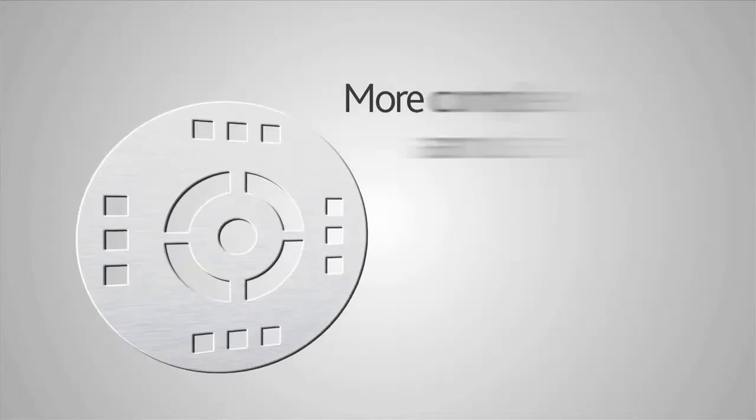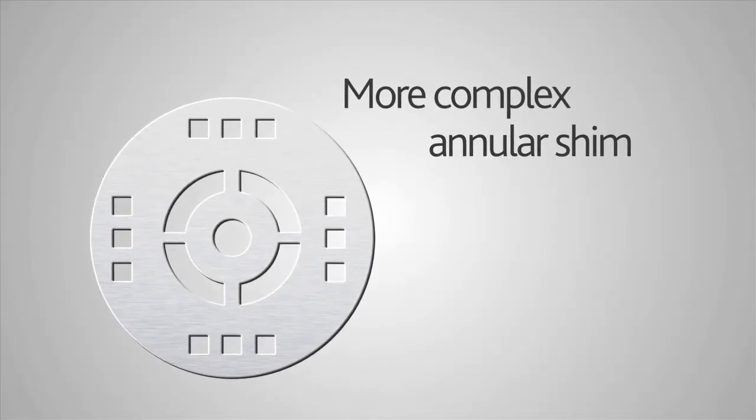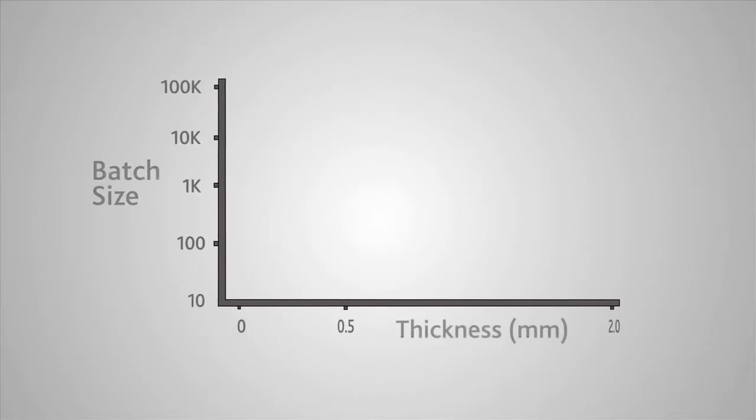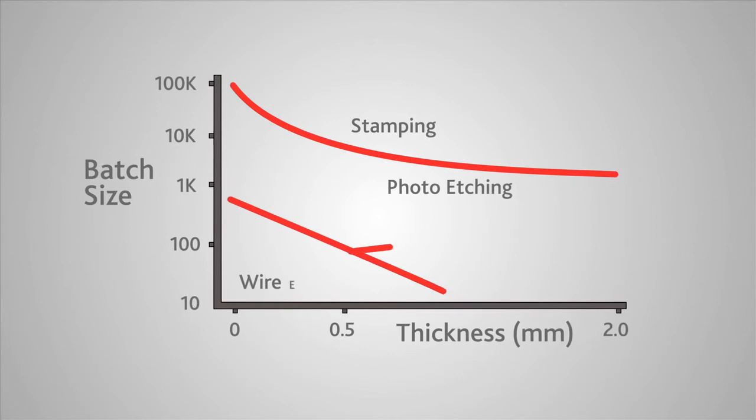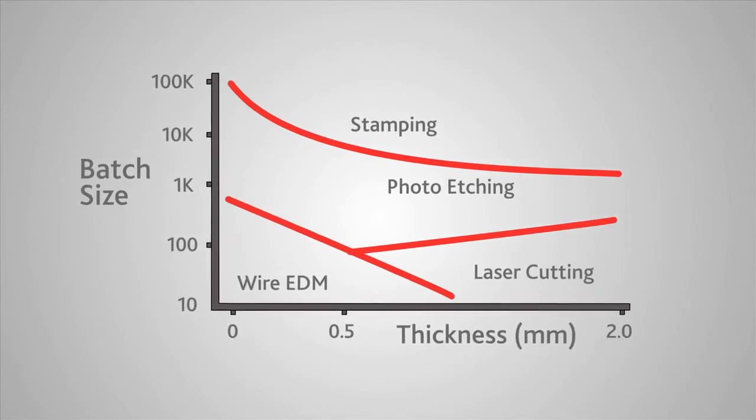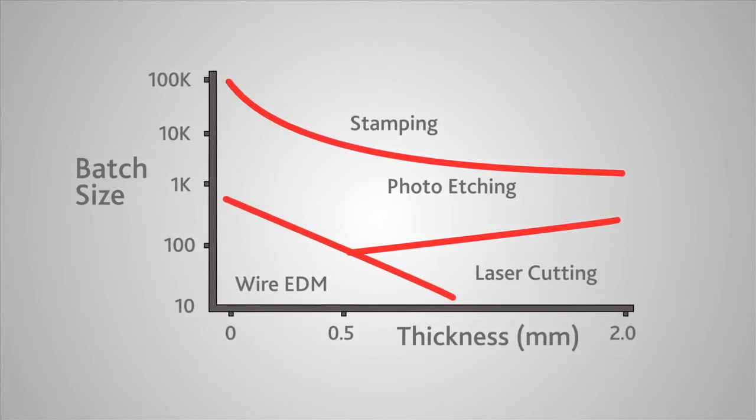Photo etching really excels when you are producing a very complex part. Unlike laser cutting, we etch all the features simultaneously, and so the more complex the components, the more the economics favor photo etching as a method of production.